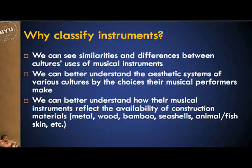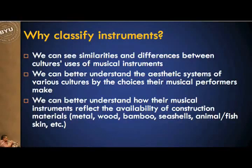Number three, we can better understand how their musical instruments reflect the availability of construction materials — be it metal, wood, bamboo, seashells, animal or fish skin, things like that. The materials are very important to considering how a musical culture developed.